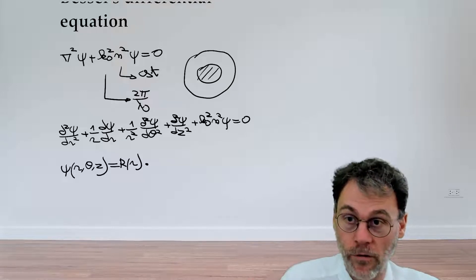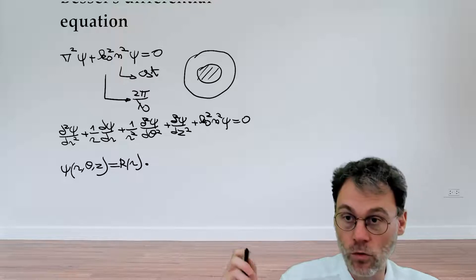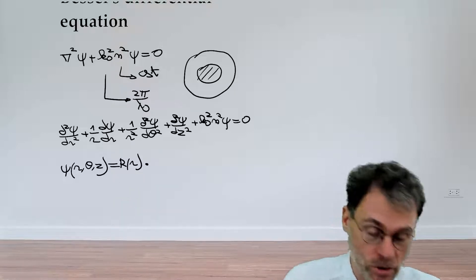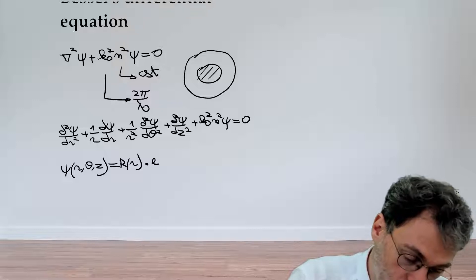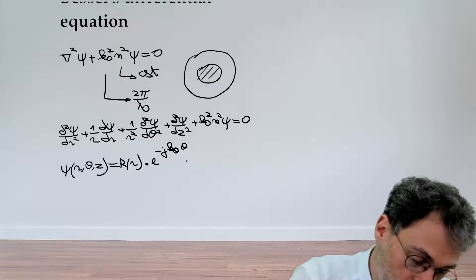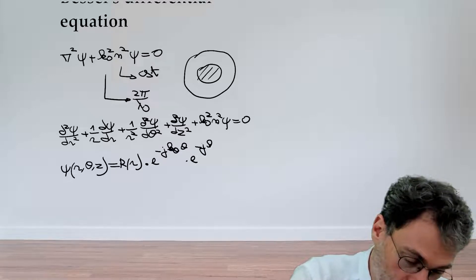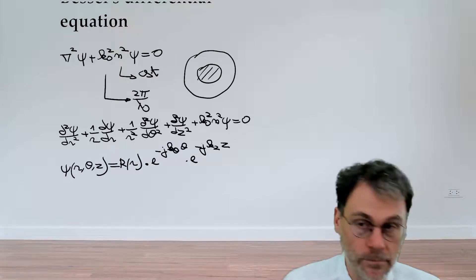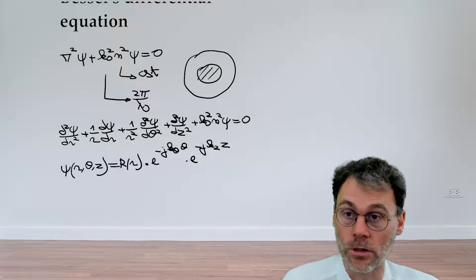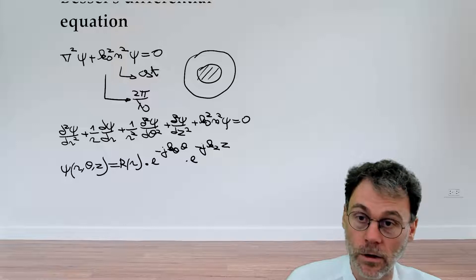Let's use one more flash of divine inspiration to already now propose a certain form for the final two functions. Let's say the θ dependence is given by exponential minus j kθ θ, and here we have minus kz z, where for our purposes kz and kθ are constants coming from the separation of variables technique.